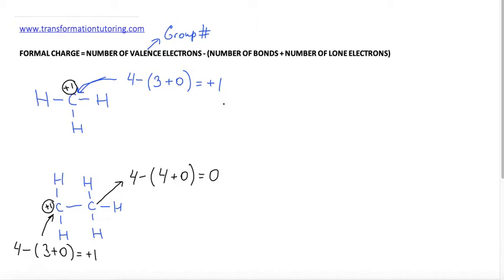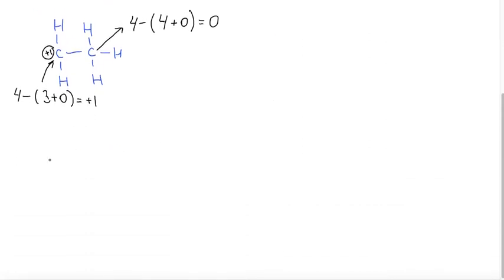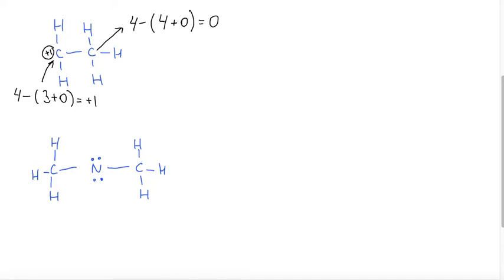Let's do another example. Our next example has a molecule where carbon is attached to 3 hydrogens and also attached to a nitrogen, and that nitrogen is attached to another carbon with 3 hydrogens. Let's calculate the formal charge for all of the elements here. Starting with this carbon: it has 4 valence electrons, it is connected to 4 bonds, and it has no lone electrons around it. So 4 minus 4 is 0 — it has no formal charge.